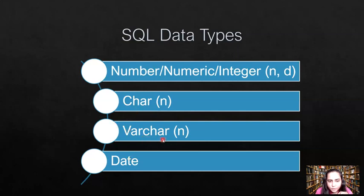Otherwise we go to variable character. For example, if you want to store a name or an address where you don't know exactly how many characters will be required, we use variable character. And then there's also a data type to store date. So these are the four main data types — there are many more in SQL but I'm not going to cover all of those in this video.